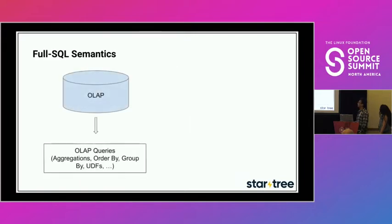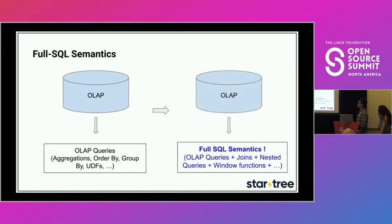The fourth point is full SQL semantic support. Most traditional OLAP queries are aggregations, filters, group by, order by, or complex UDFs to transform selected rows. Nowadays users are doing enrichment joins, nested queries, window functions, and complex event analysis — such as correlating a sessionized stream of data. This type of query demands full SQL semantic support.